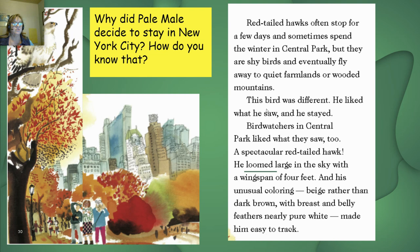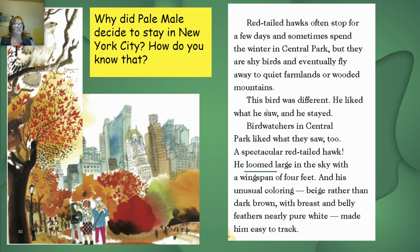Red-tailed hawks often stop for a few days and sometimes spend the winter in Central Park, but they are shy birds and eventually fly away to quiet farmlands or wooded mountains. This bird was different — he liked what he saw and he stayed. Bird watchers in Central Park liked what they saw too: a spectacular red-tailed hawk. He loomed large in the sky with a wingspan of four feet, and his unusual coloring — beige rather than dark brown, with breast and belly feathers nearly pure white — made him easy to track. Jot down in your journal what makes Pale Male distinct.